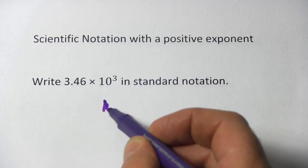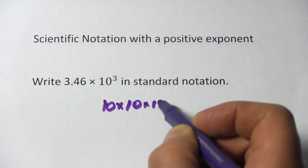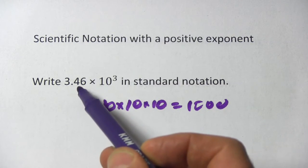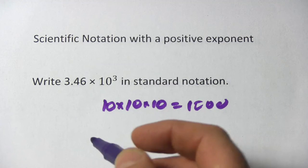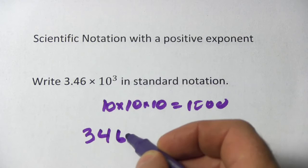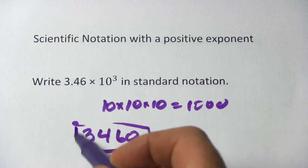Well, 10 to the third is 10 times 10 times 10, and that's 1,000. So this number is 3.46 times 1,000, and if you punch that in your calculator, you'll get 3,460. And that's our answer.